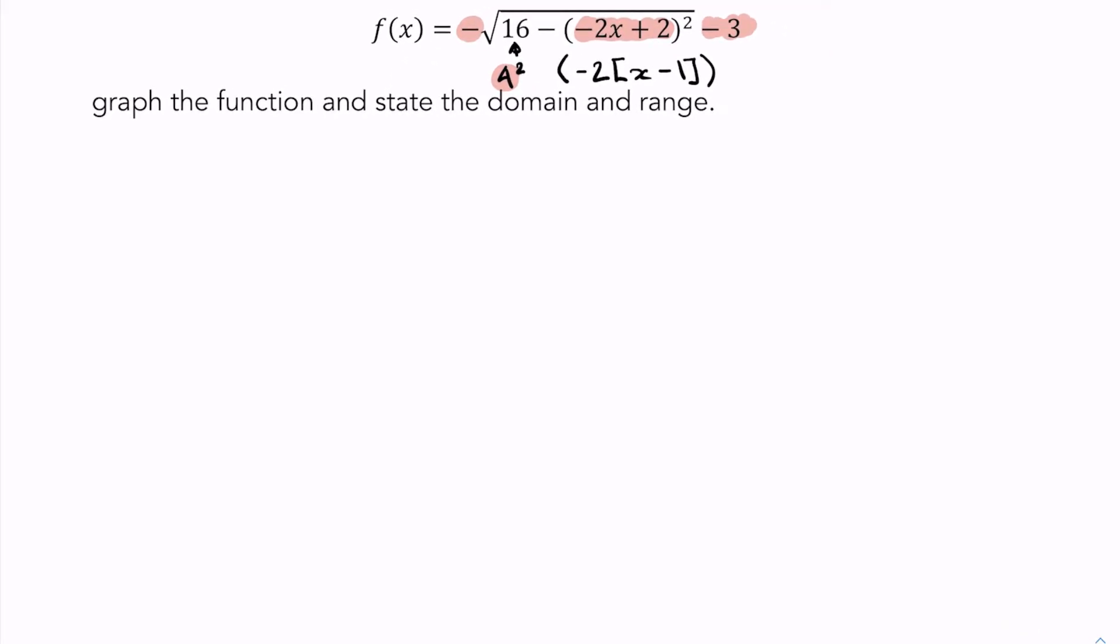We have a whole bunch of stuff going on here. I'm going to do the mapping notation for this so we can see where the points go. So (x, y) is going to get mapped to the point (1/(-2))x + 1, or (1/b)x + 1, and -y, or -1y - 3.